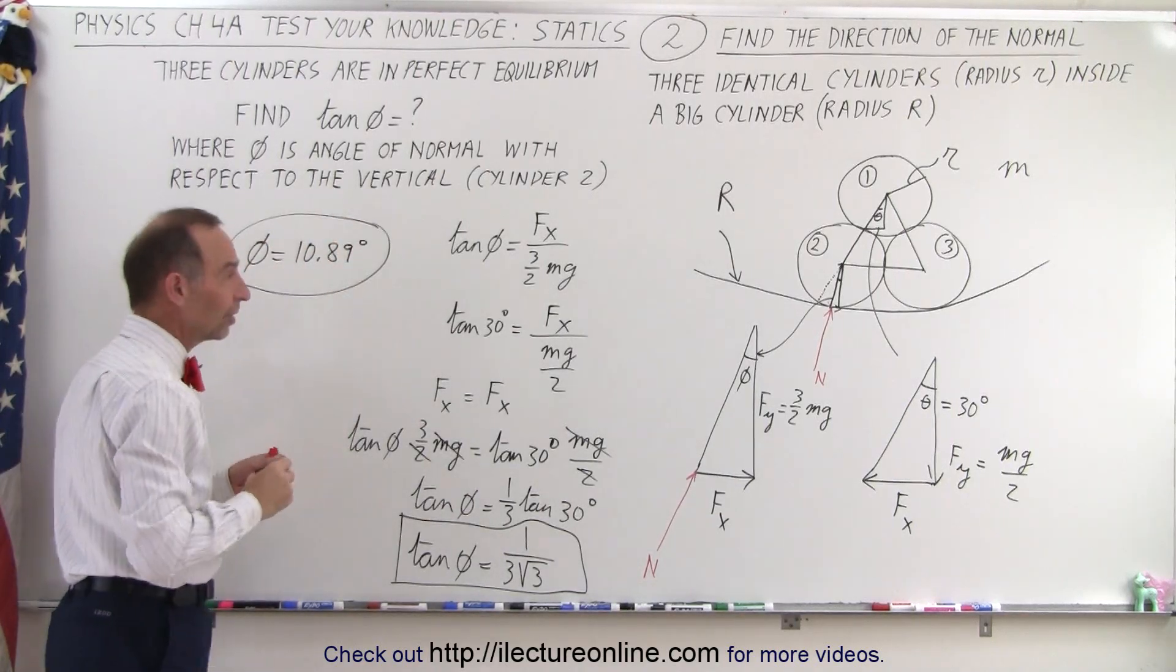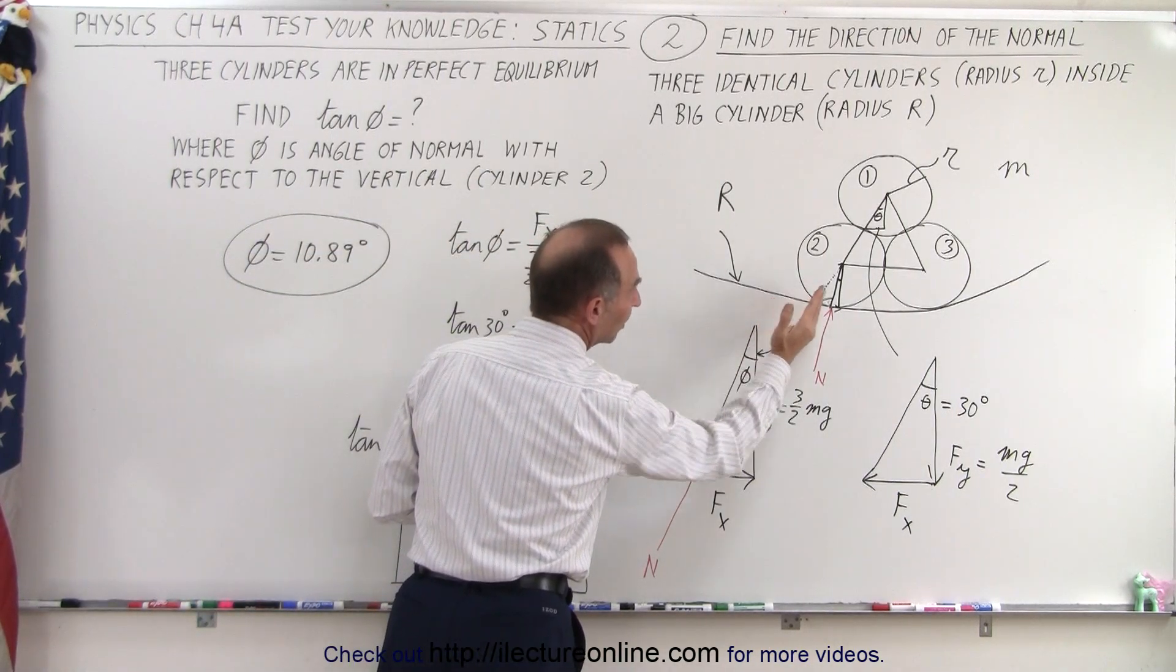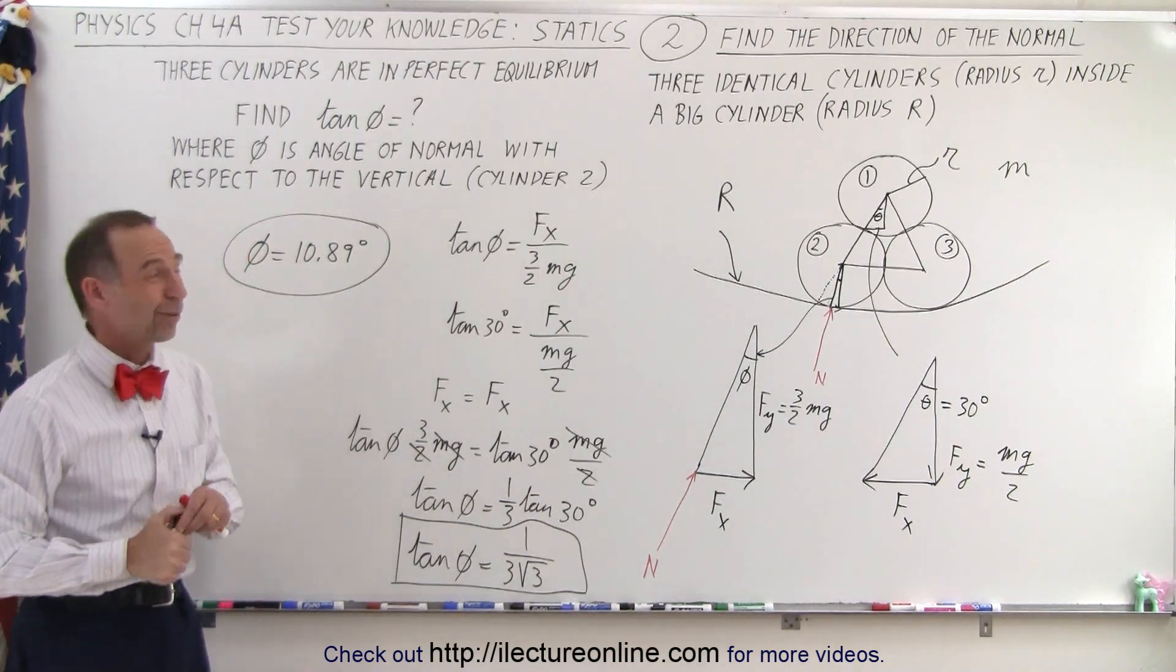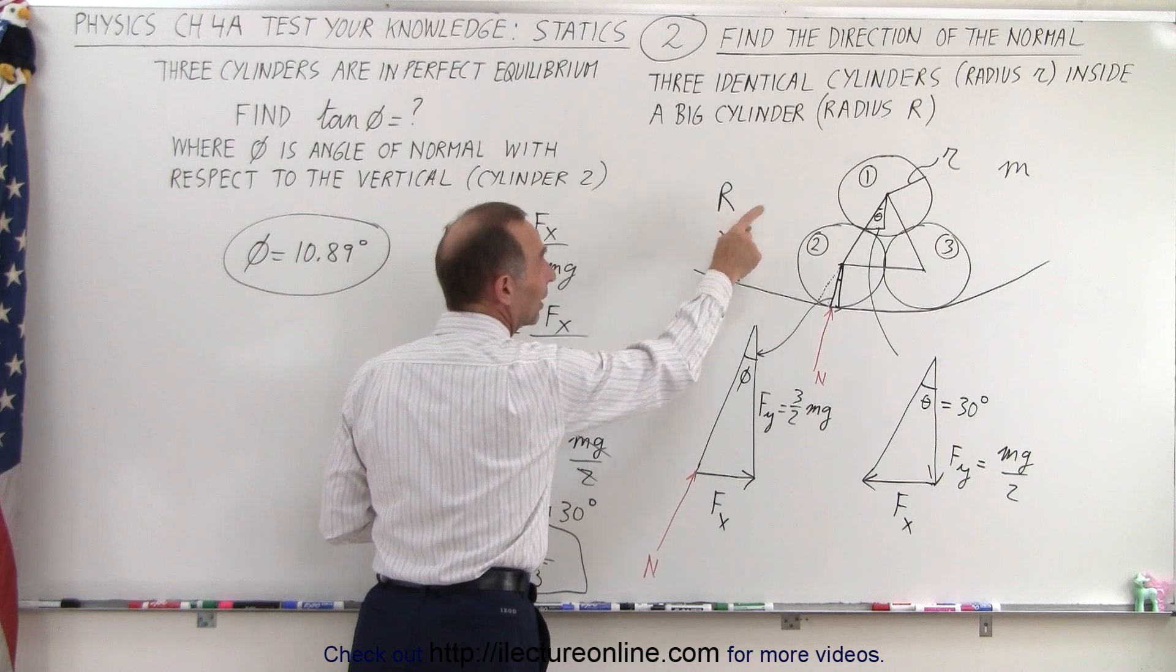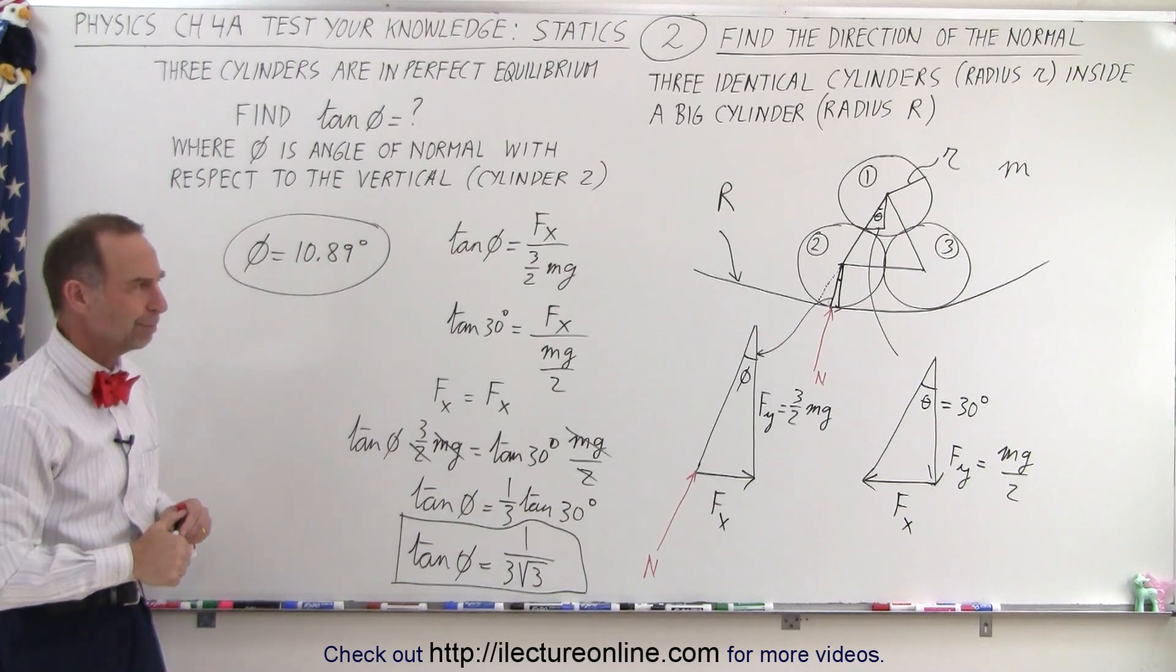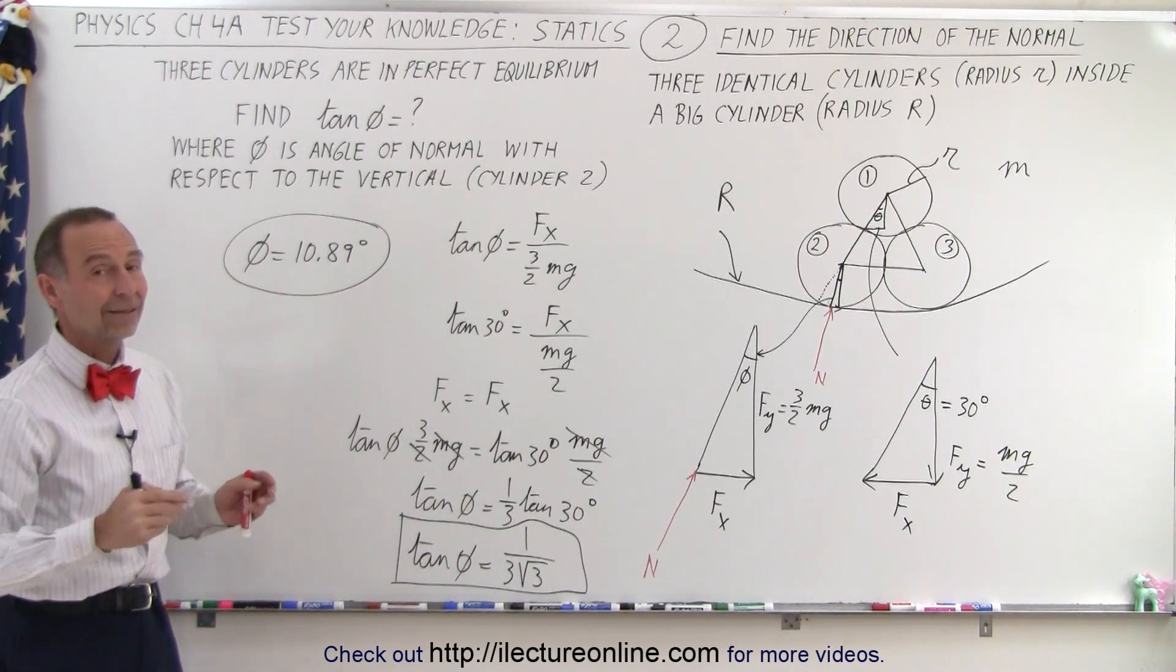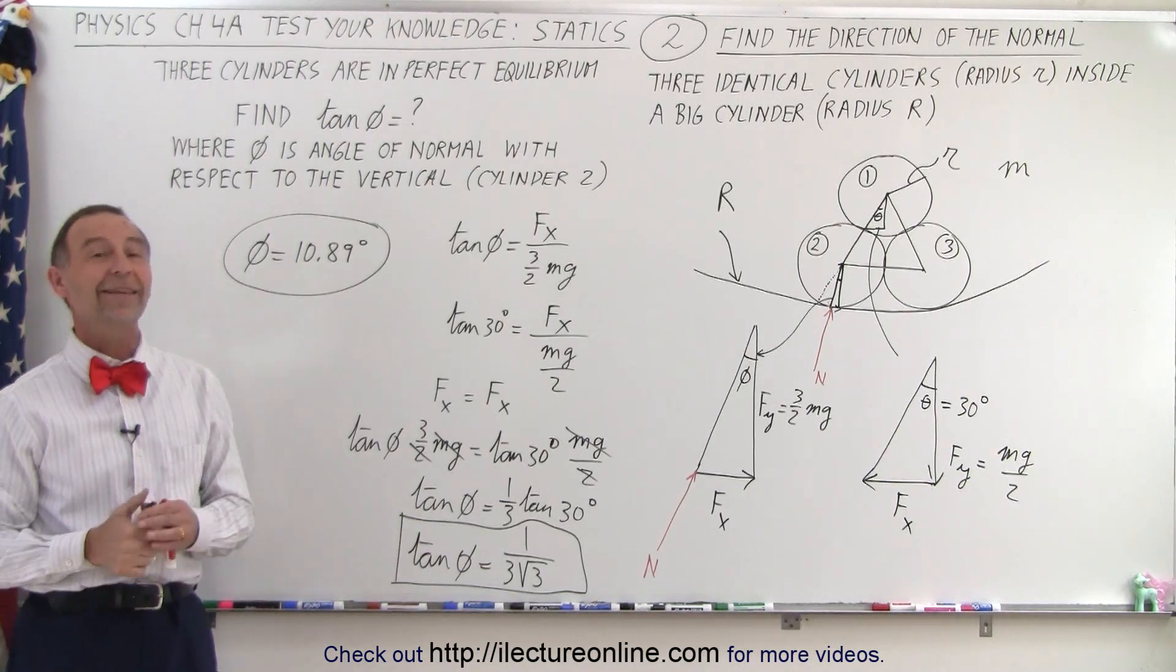And so you can clearly see that it's not going to be an angle of 30 degrees that you might have thought, but an angle of only 10.89 degrees. Of course, that requires this radius to be the exact size required in relation to the small radius of the three cylinders. Otherwise, it cannot work and cannot be in perfect equilibrium. I think on the next video, we should show how to calculate the value of big R relative to the small radius. We'll do that on the next video.